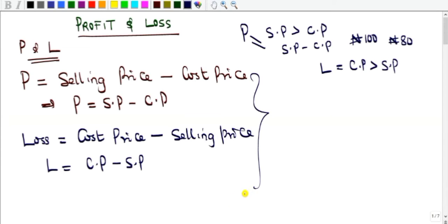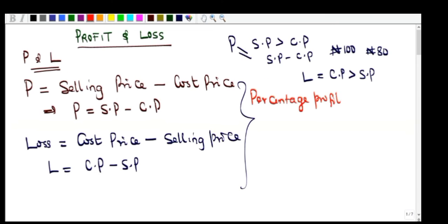When we have found the profit or loss of a transaction, there is another important aspect: the percentage of the cost price that the profit or loss represents. Both percentage profit and percentage loss are calculated with respect to the cost price. Percentage profit = (Profit / CP) × 100.